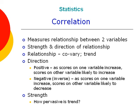By direction of relationship, I mean whether the correlational trend is positive or negative. For a positive correlation, the trend is that when scores on one variable increase, scores on the other also increase. For a negative or inverse relationship, as scores on one variable increase, the trend is for scores on the other variable to decrease.